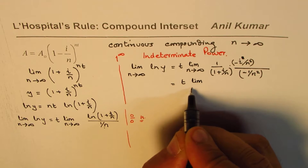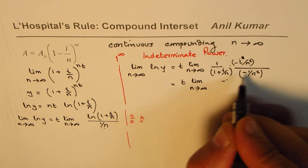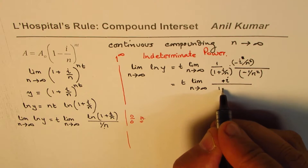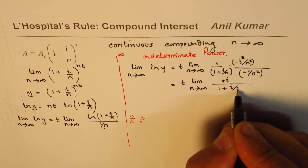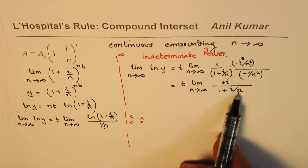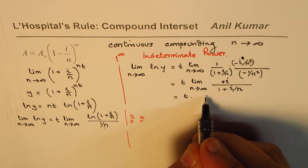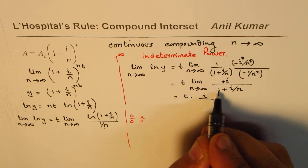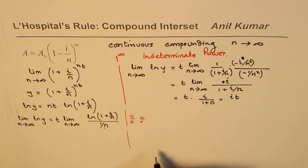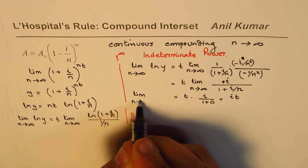After cancellation, we get T times the limit as N→∞ of i/(1 + i/n). The minus signs cancel to give a positive result. Substituting N = ∞, i/n → 0, giving T times i/(1 + 0) = T times i. So the result is that the limit of ln Y as N→∞ equals iT.